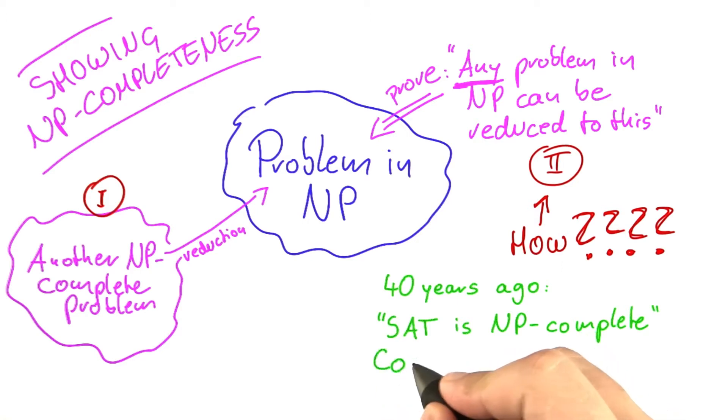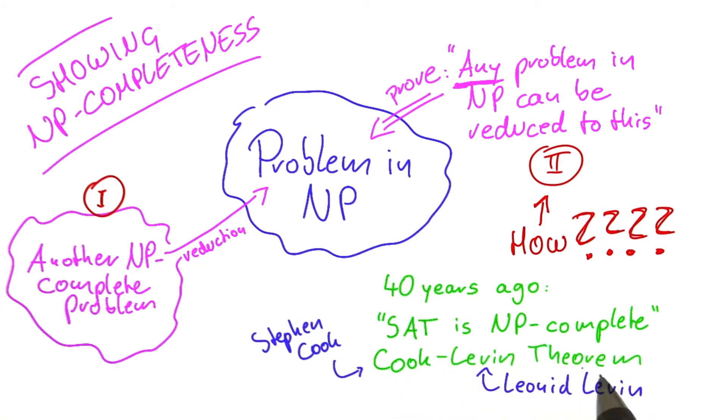The result is called the Cook-Levin theorem. This theorem is named after Stephen Cook and Leonid Levin, who discovered it independently of each other in the 1970s.